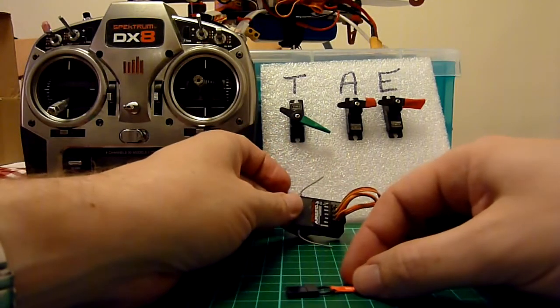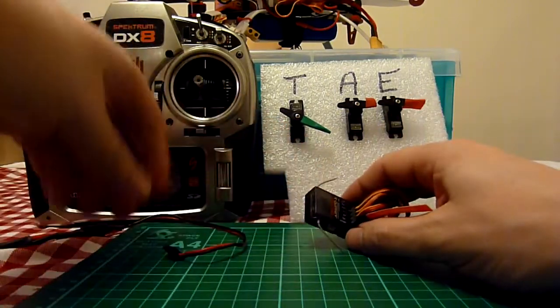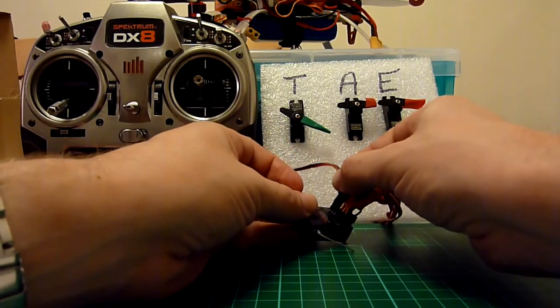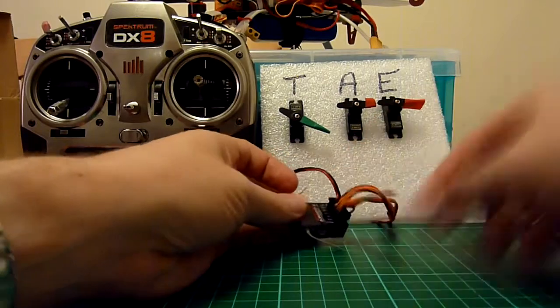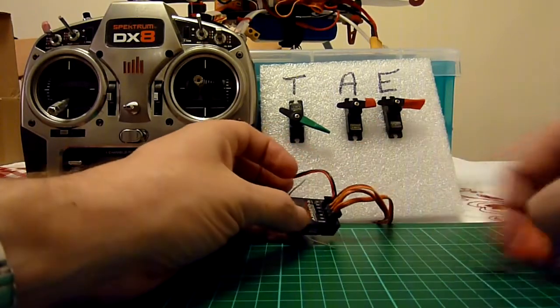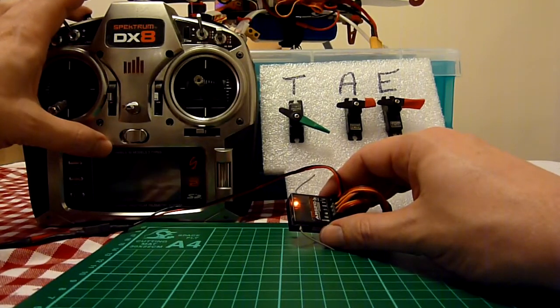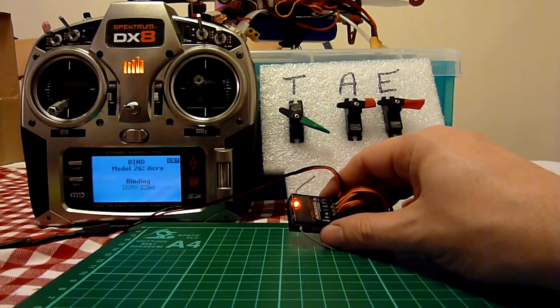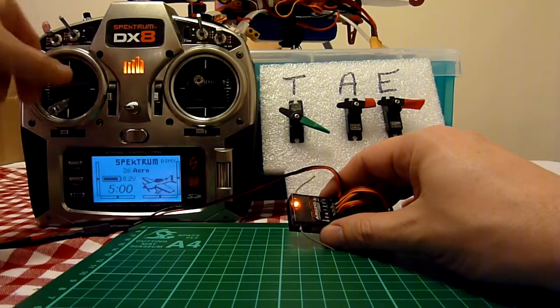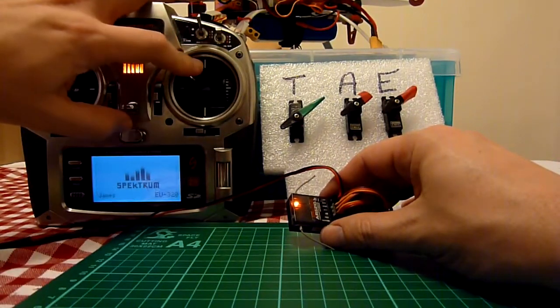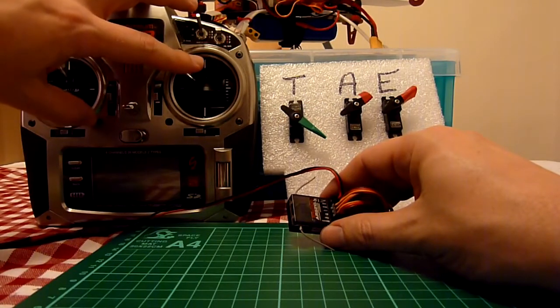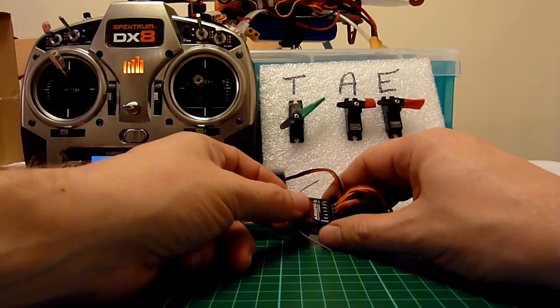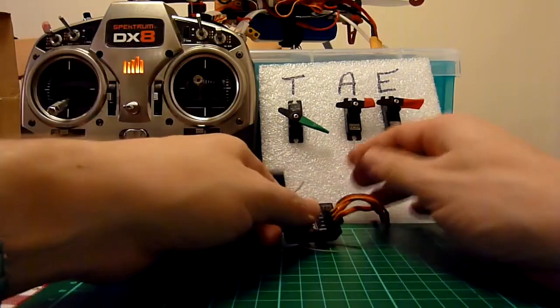Alright, so this is the AR6210 and I already know this only does a hold bind, but I'll just prove it. We just plug that, plug power in. So that's now ready to bind. I'll pull that out as if I was going to do a preset bind but I know it doesn't work. So that's binding DSMX. The throttle goes to low but the other channels just hold, which I already knew. I believe the AR6200 is the same, it will only do a hold bind.